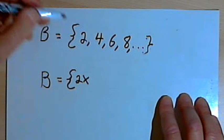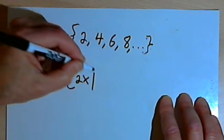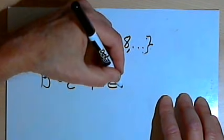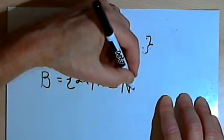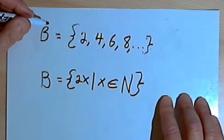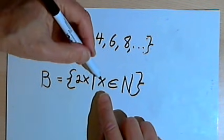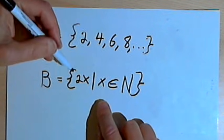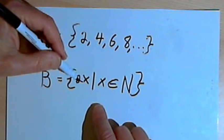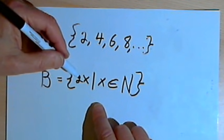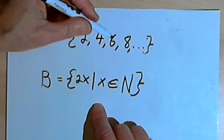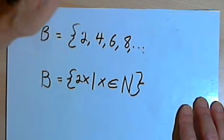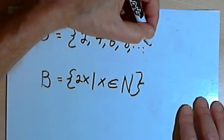Now here's how this works. It's the set of all 2x, such that, that's my bar, x is an element of the natural numbers. x is an element of set N. So what's happening is this. I'm thinking of all the natural numbers, 1, 2, 3, 4, but my set elements are going to be 2x. So I'm going to take each of the natural numbers and multiply by 2, which will give me all of the even numbers. And as before, if I wanted this set to stop somewhere, let's say I wanted to stop at 200.